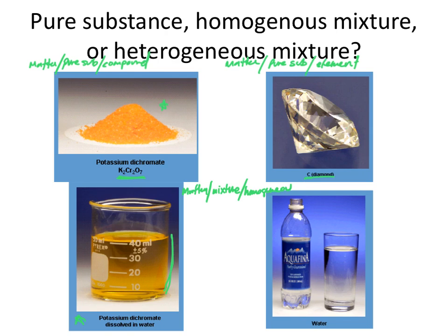Now moving to the last example — this is water, H2O. We start with matter, then pure substance. The H2O molecule has more than one type of element present, so it can be decomposed into simpler pieces. So we're going to have a compound here.